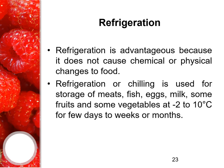The second method is refrigeration. It is advantageous because it does not cause any chemical or physical changes to food. Refrigeration or chilling is used for storage of meats, fish, eggs, milk, some fruits and some vegetables at minus 2 to 10 degrees Celsius for a few days to few weeks or months.